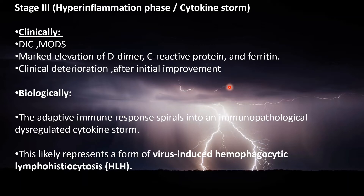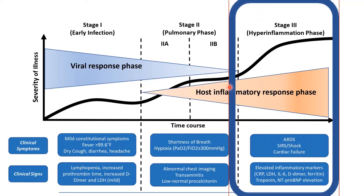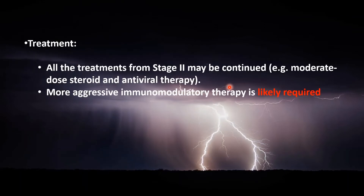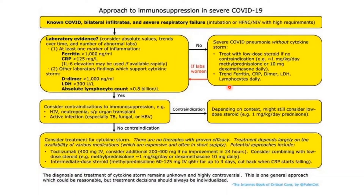Stage 3 likely represents the virus-induced HLH phase, where prognosis is bad. Treatment from Stage 2 is continued, and probably a more aggressive anti-inflammatory therapy is required. In this flowchart, patients with COVID confirmed by bilateral infiltrates and PCR are assessed. If they have severe respiratory failure, lab evidence of inflammation such as high ferritin and CRP is checked, along with evidence of cytokine storm with high D-dimer and LDH. If the patient has no immunosuppression, they are considered for immunomodulatory therapy including steroids.